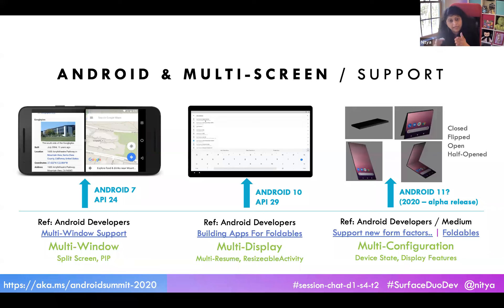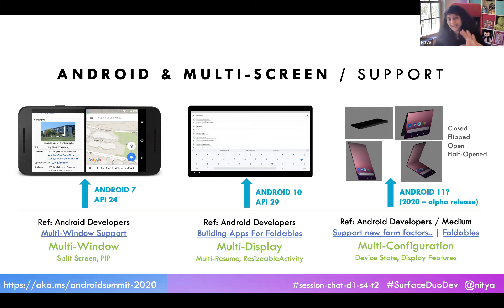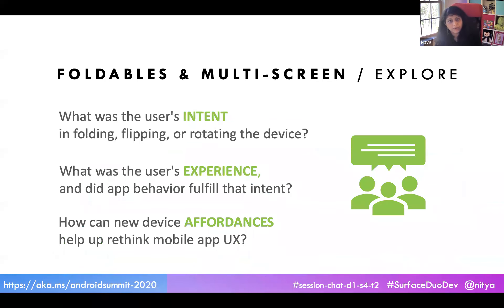Coming to 2020, multi-configuration is really about two things. With the Jetpack Window Manager API, we have the ability to query for device state as well as display features. As an app developer, you're asking for two things: an API that lets you query for display state and change events, and guidance on design patterns.